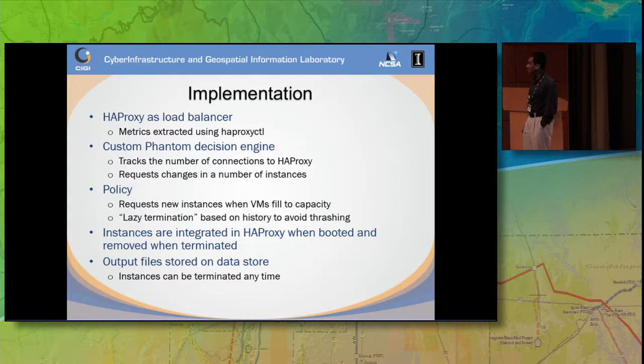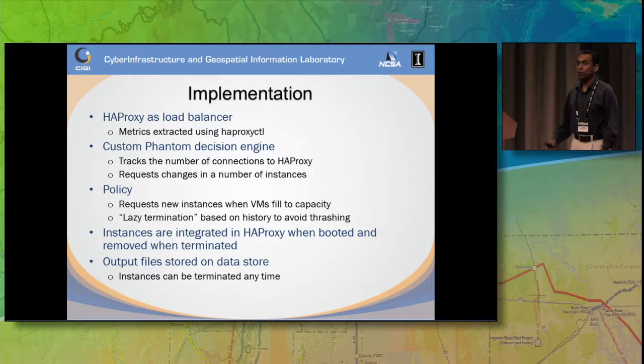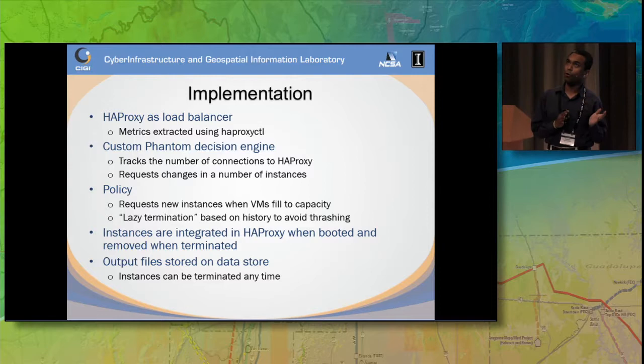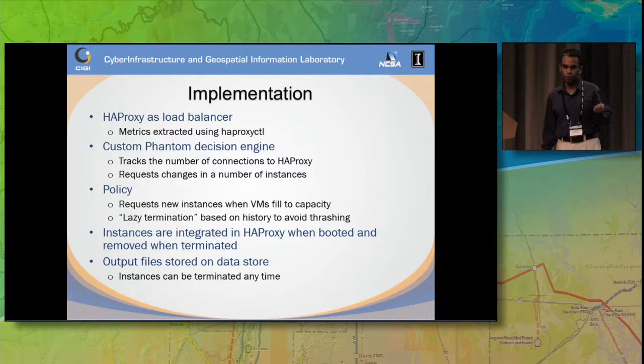Some implementation details: we used HA Proxy as a load balancer, and developed custom decision policies for the engine. We also implemented something called lazy termination to avoid thrashing. For example, if you have 10 users waiting and you start up 10 VMs, then drop to 5 and immediately 5 more come in — that's thrashing. It's similar to the classic memory-and-disk problem where you're not using available resources efficiently.